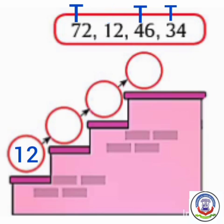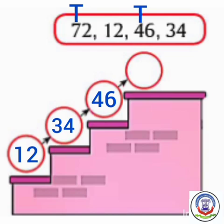Now from the remaining numbers, which number is smallest? We will first see the 10s place: 7, 4, 3. Here, 3 is smallest. So we will write 34 after 12 in the circle. From the remaining numbers, the 10s place gives us 7 and 4. Here, 4 is smallest. So we will write 46 after 34 in the circle. Now remains 72. So we will write 72 last in the circle as it is the largest number.